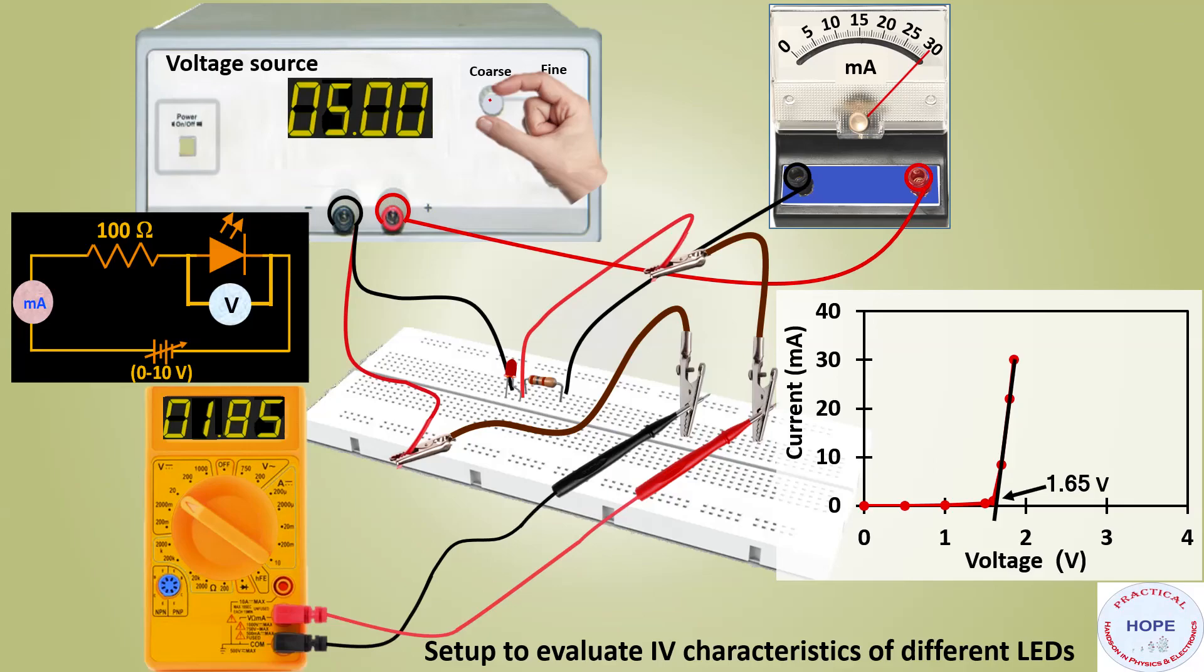We can perform the same experiment with other LEDs also. We have used three different LEDs of green color, yellow color, and violet color. Their IV characteristics are like these. These are the values of turn-on voltages: 1.85 for yellow LED, 2 volt for green LED, and about 2.75 volt for violet LED.